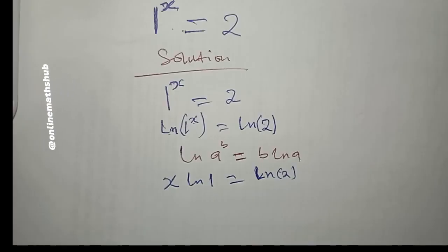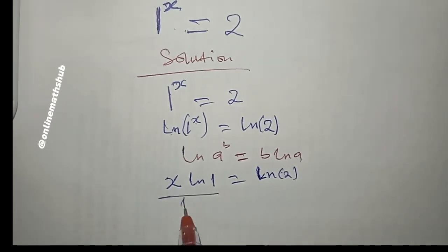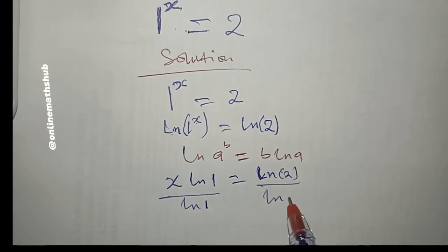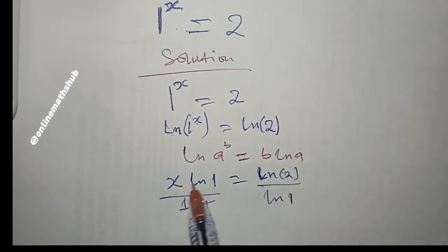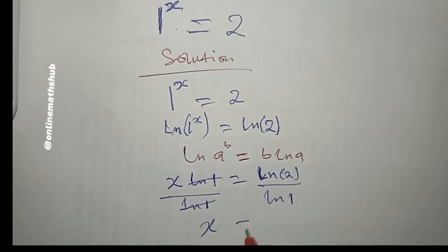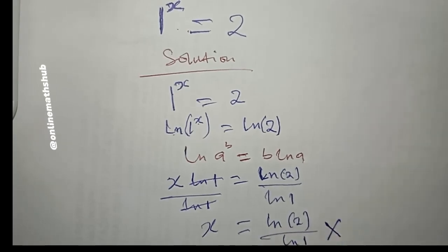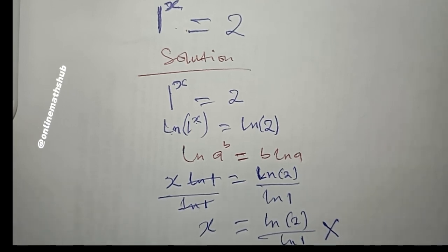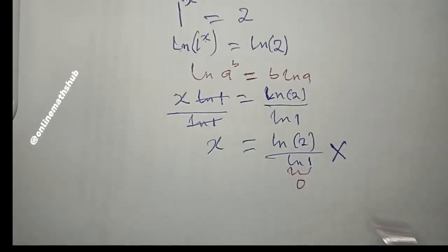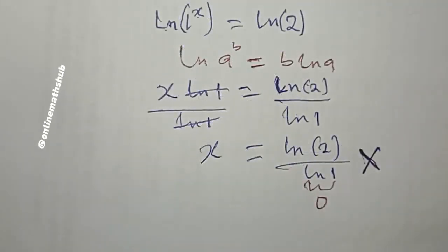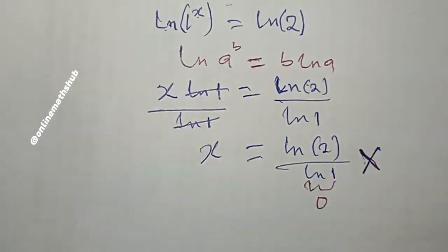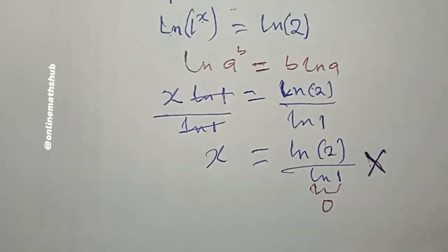The next thing is to divide by the coefficient of x, which is ln(1). Cancelling, I get x = ln(2) / ln(1). But this cannot be the solution, because ln(1) = 0, so we run into a problem — division by zero. We can conclude there is no real solution; there is no real value of x that satisfies this equation.